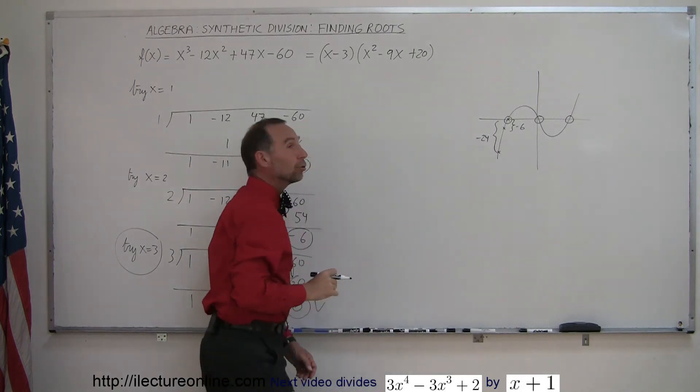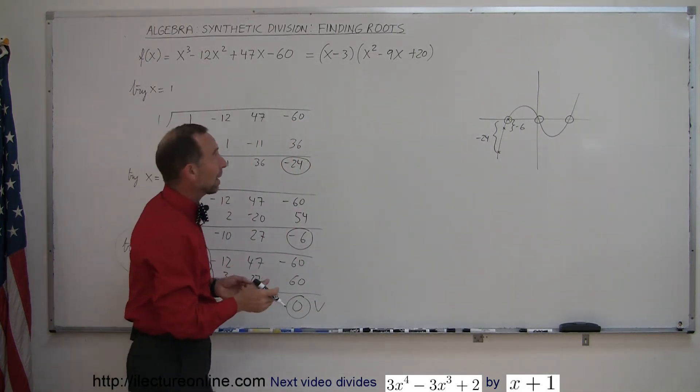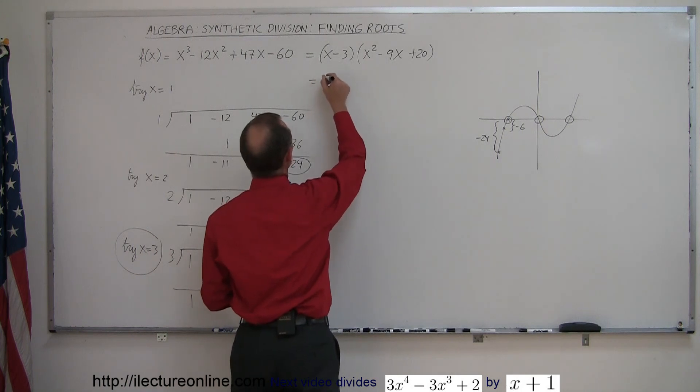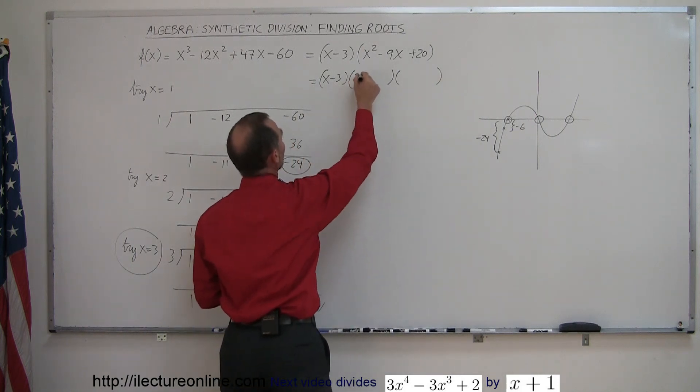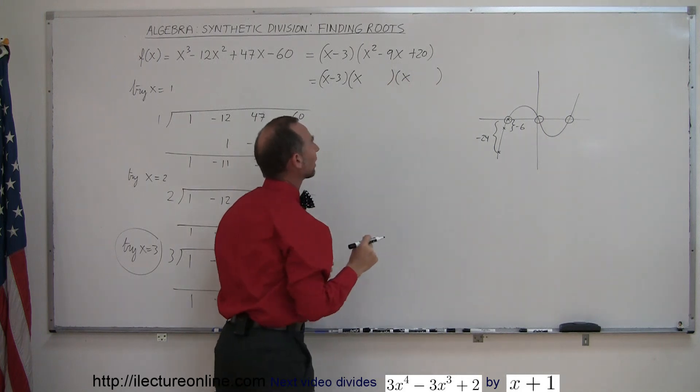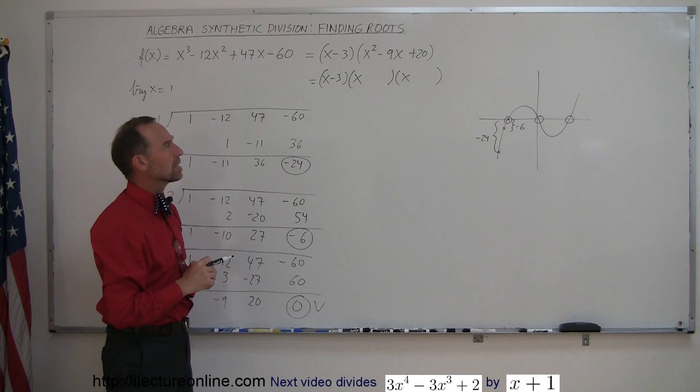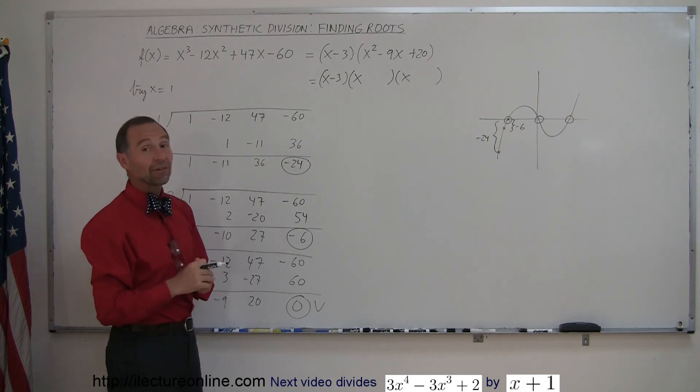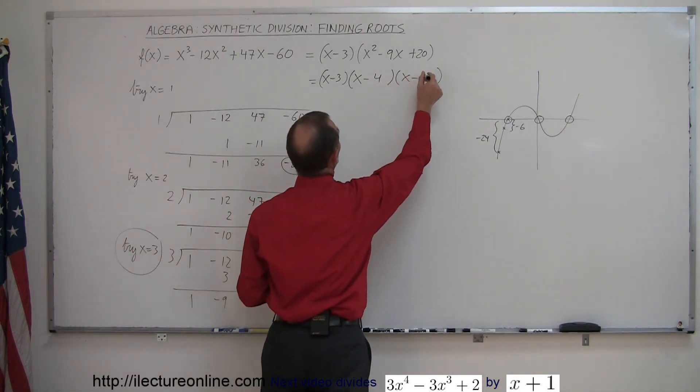And then for the remainder, we could again use synthetic division, or in this case, we could probably just factor that. We might be able to find the other roots, so this is equal to x minus 3 times, and we then think we're going to get a product of two binomials. We start with an x and an x. We're looking for two numbers: when I add them together, I get minus 9; when I multiply, I get a positive 20. I think I need two negative numbers, and 4 and 5 look like they may just do it. So x minus 4 and x minus 5.